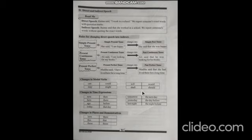Continuing time and place changes: 'tomorrow' and 'yesterday' also have their corresponding indirect speech forms, as does 'last night'. Change in place and demonstratives: 'here' changes to 'there', 'this' changes to 'that', 'these' changes to 'those'. Now let's discuss some examples to properly understand the concept.